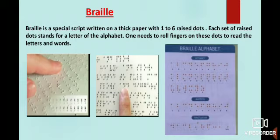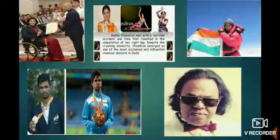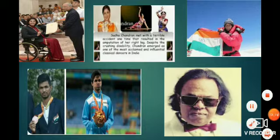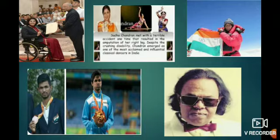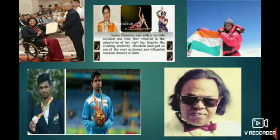We come across many courageous people with various impairments who refuse to burden society with their disability. The first picture is Deepa Malik — she is the first Indian woman to win a Paralympic medal. She created history during the Rio Paralympic Games in 2016, clinching the silver medal in the F53 shot put event. The next picture is Sudha Chandran, who met with a terrible accident that resulted in the amputation of her right leg. Despite this crushing disability, Sudha Chandran emerged as one of the most acclaimed and influential classical dancers in India.